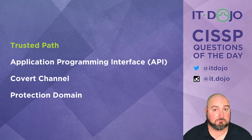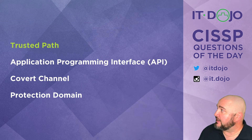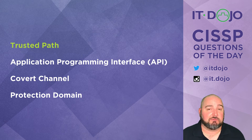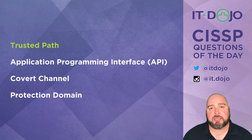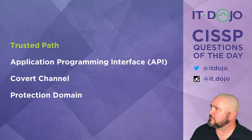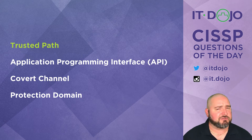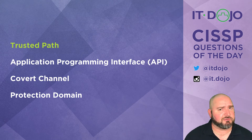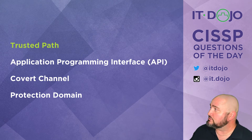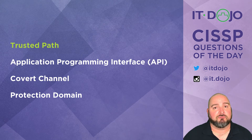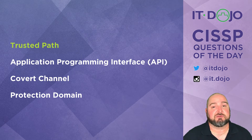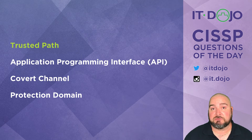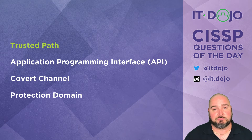The last item on the list there to distract you was protection domain. Protection domain represents all of the privileges and permissions associated with code that comes from a particular source — also not what we're looking for. We were dealing specifically with trusted path, so make sure you're familiar with the whole notion of a trusted computing base as well as the definition of a trusted path when you go take the CISSP exam.